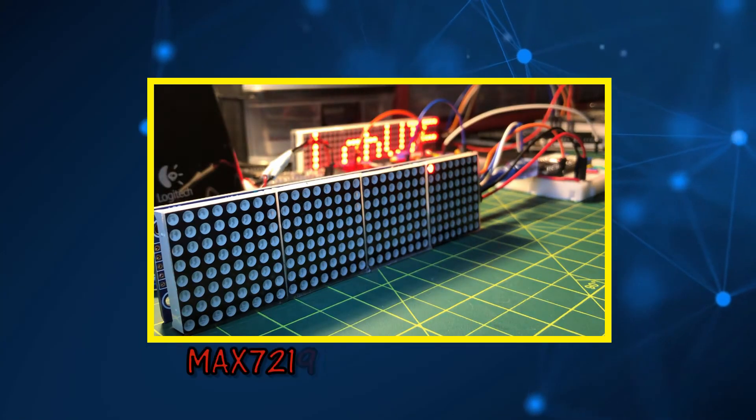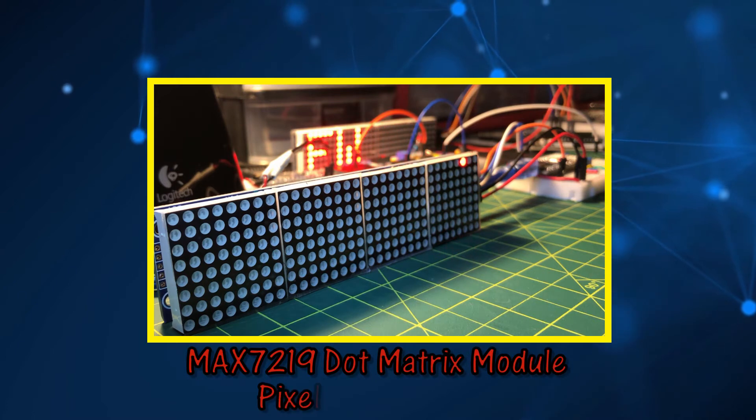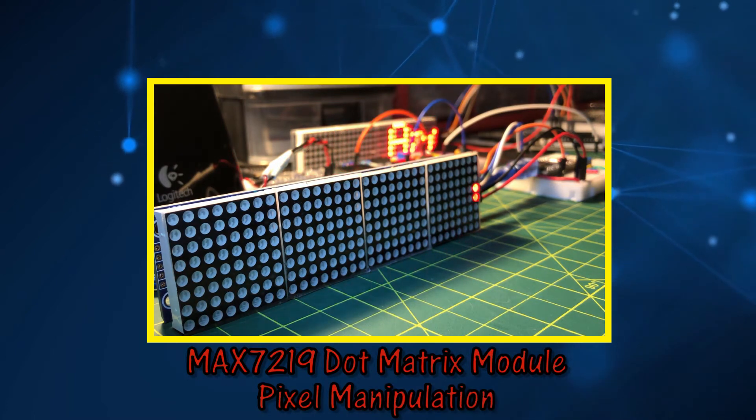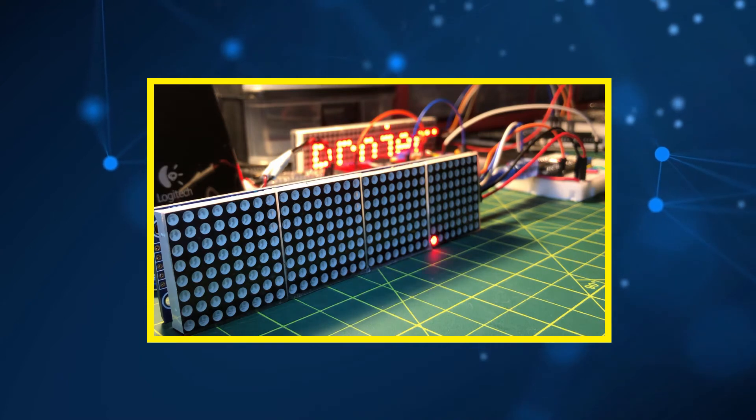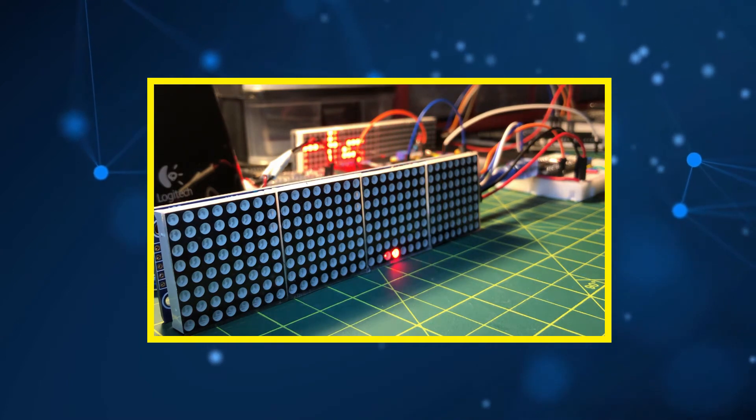In this video, pixel manipulation on the MAX-7219 dot matrix display will be demonstrated. Different shapes and pixel motion will be sketched on the display.